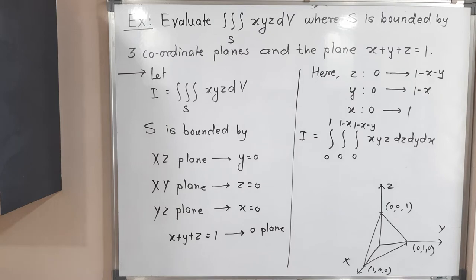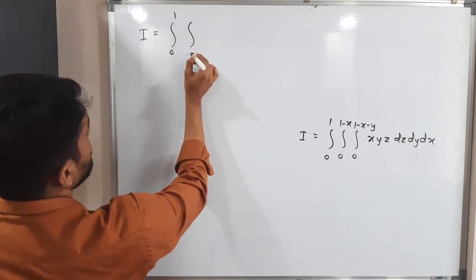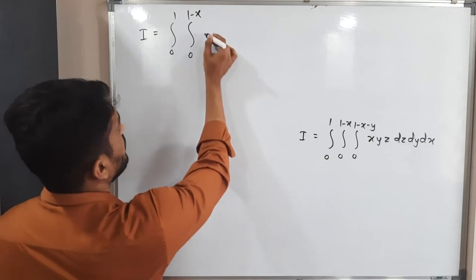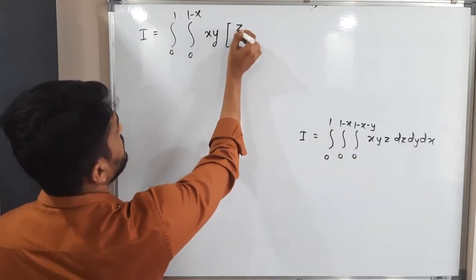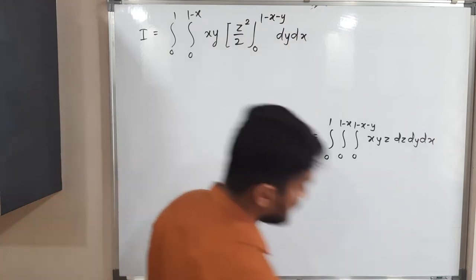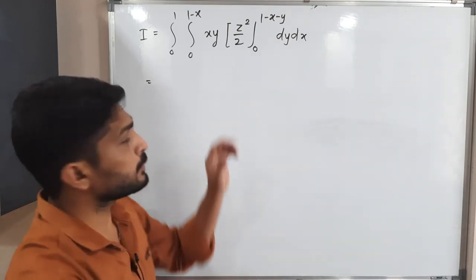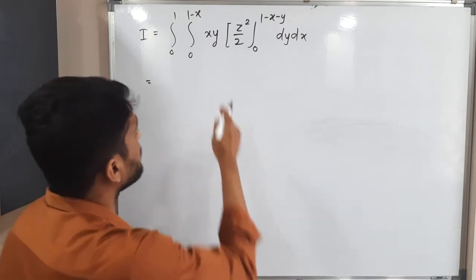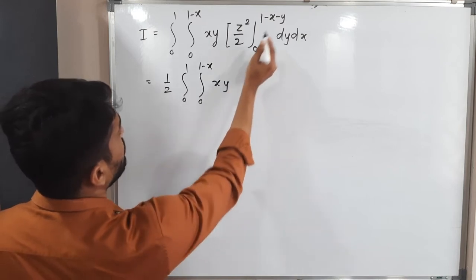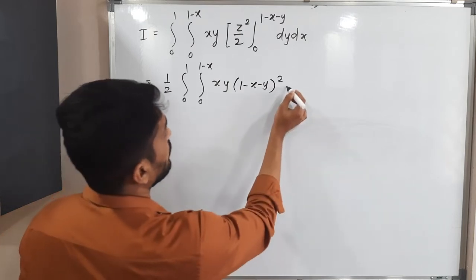We now set up the triple integral: integration from 0 to 1 (in x), 0 to 1 − x (in y), 0 to 1 − x − y (in z) of x·y·z dz dy dx. Integrating with respect to z first, treating x and y as constants, the integral of z is z²/2. Applying limits 0 to 1 − x − y gives (1 − x − y)²/2 dy dx.